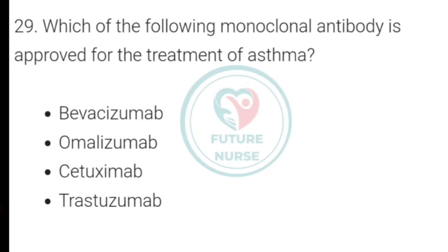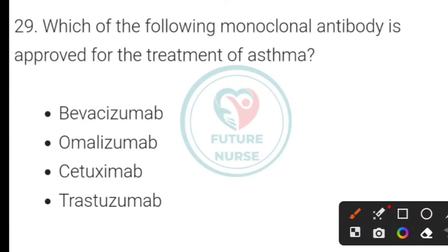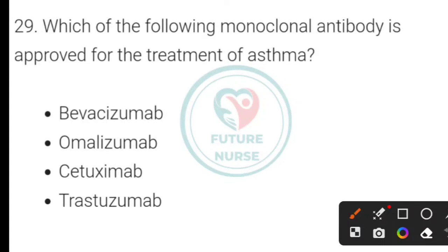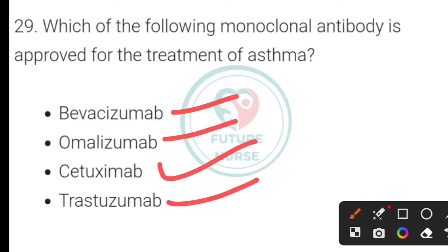Which of the following monoclonal antibodies is approved for the treatment of asthma? Options: bevacizumab, omalizumab, cetuximab, or trastuzumab. The correct option is omalizumab.